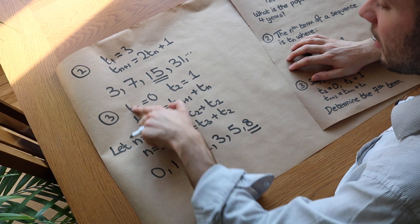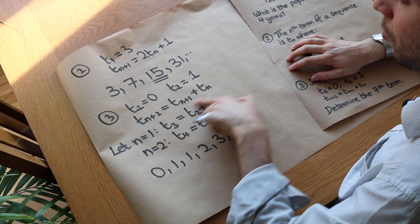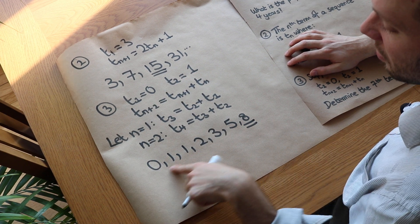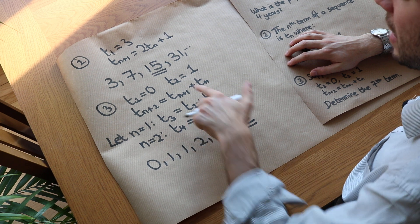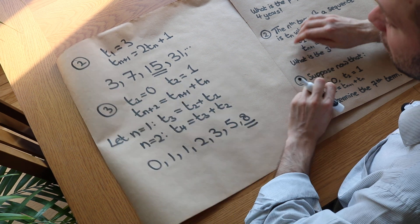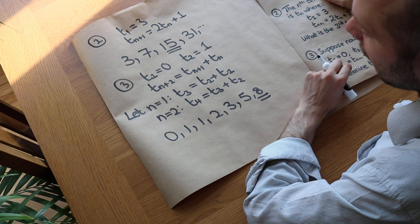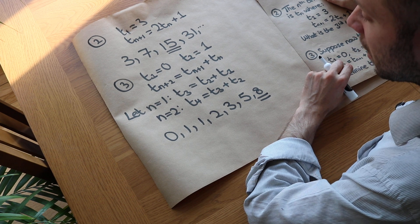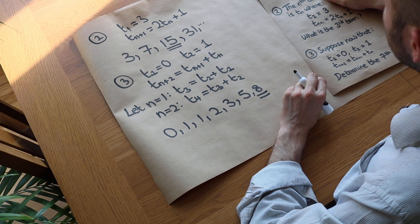This is the term-to-term formula for something called the Fibonacci sequence. You might recognise it — it's the Fibonacci sequence, represented using this recurrence formula. You might wonder whether there is a position-to-term formula for the Fibonacci sequence, and the answer is yes.